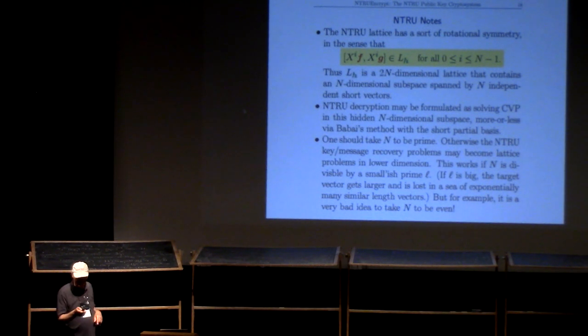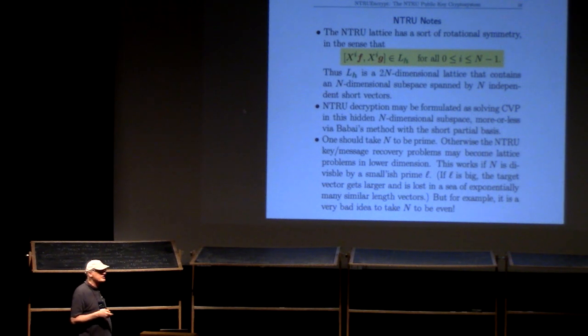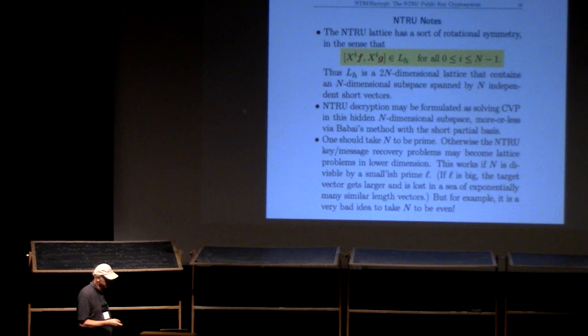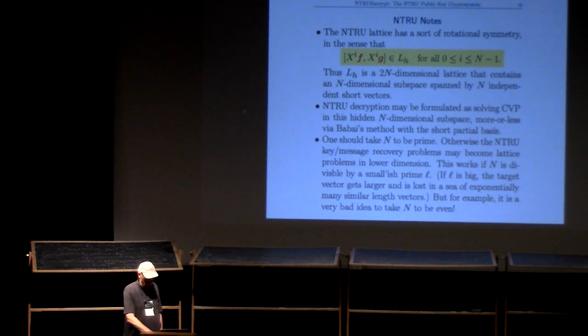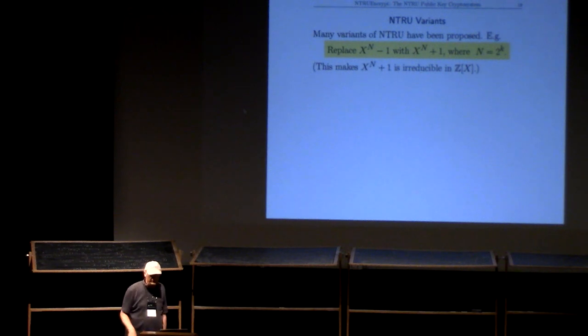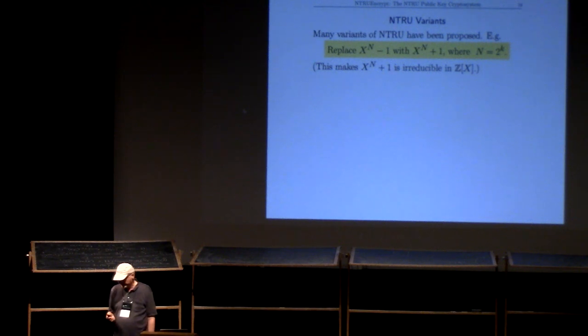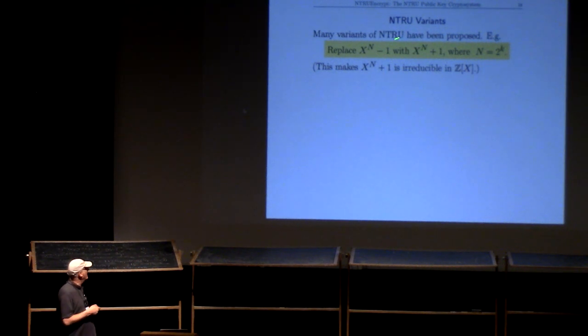Your polynomials should be modded out by X^n - 1. Otherwise, you can solve a lower-dimensional problem. In particular, if n is even, there's a lattice problem of half the dimension which will break it. So you certainly don't want n to be even. That observation at the bottom was by cryptographer Alex May.